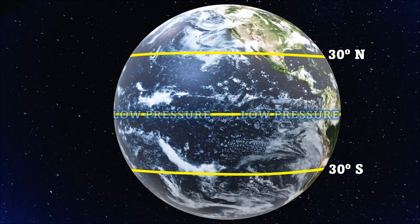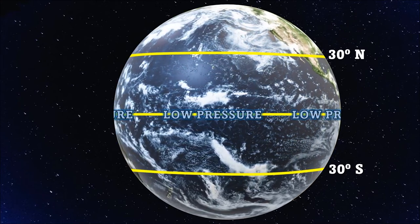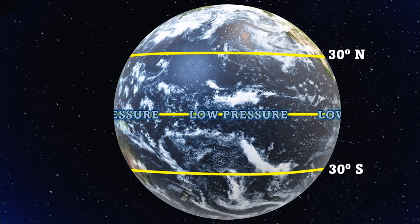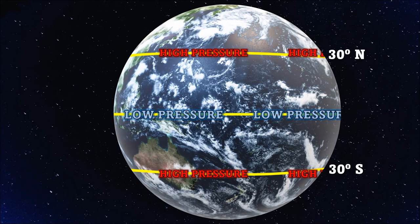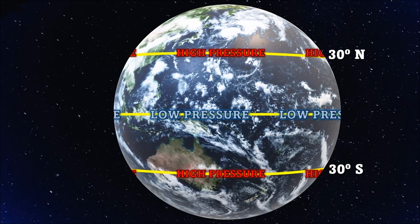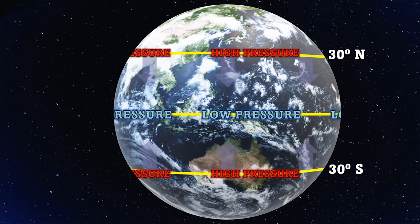Now, the equator is low pressure with fast moving hot air. 30 degrees north and south is high pressure with slower cold air. This means that hot air from 30 degrees north and south is travelling along the trade winds towards the equator since high pressure seeks out low pressure.